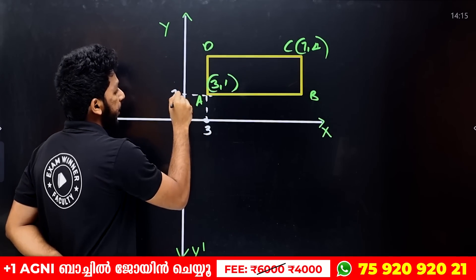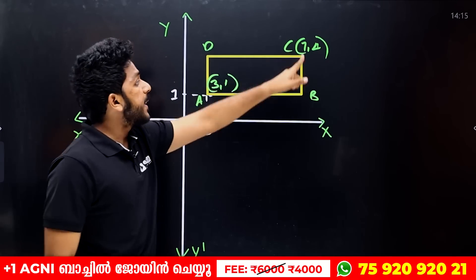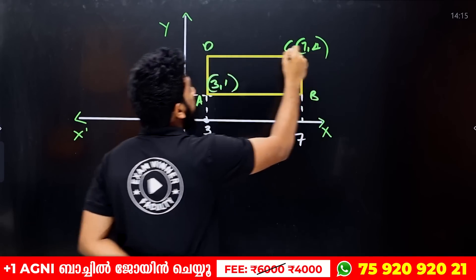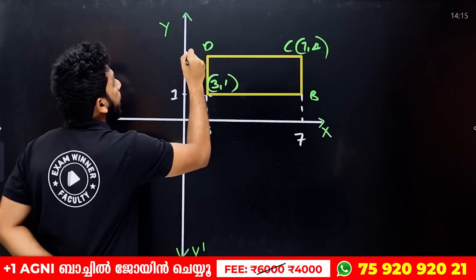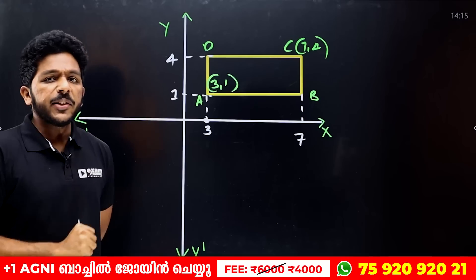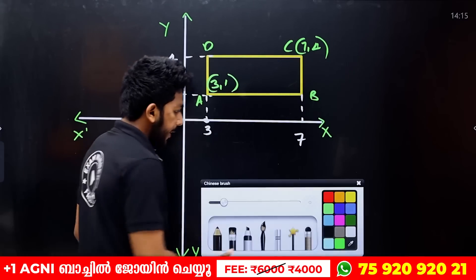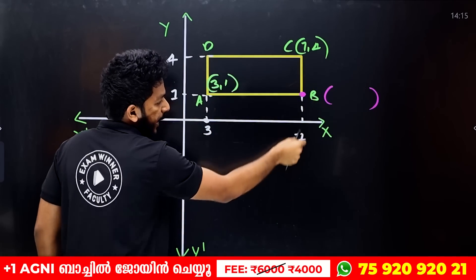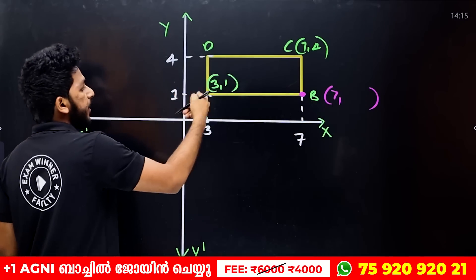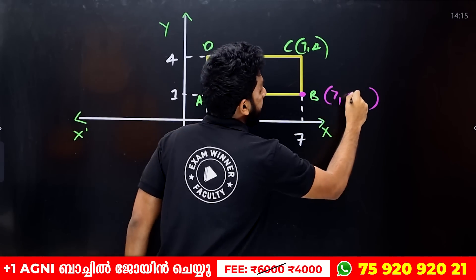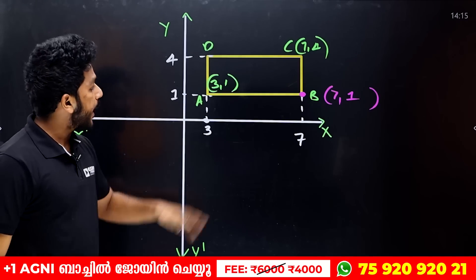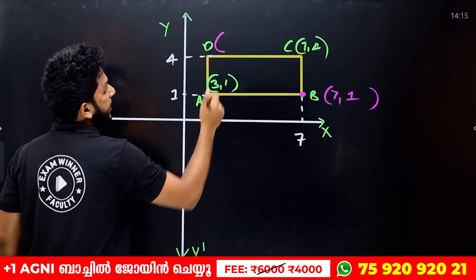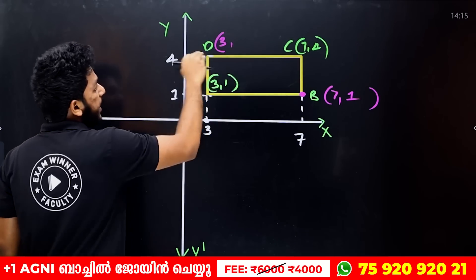In the same way, find the y value. Then you get the y axis result. Using this logic, you get B. So B has x equal to 7 and y equal to 1, giving B as (7, 1). Then D has x equal to 3 and y equal to 4, giving D as (3, 4).